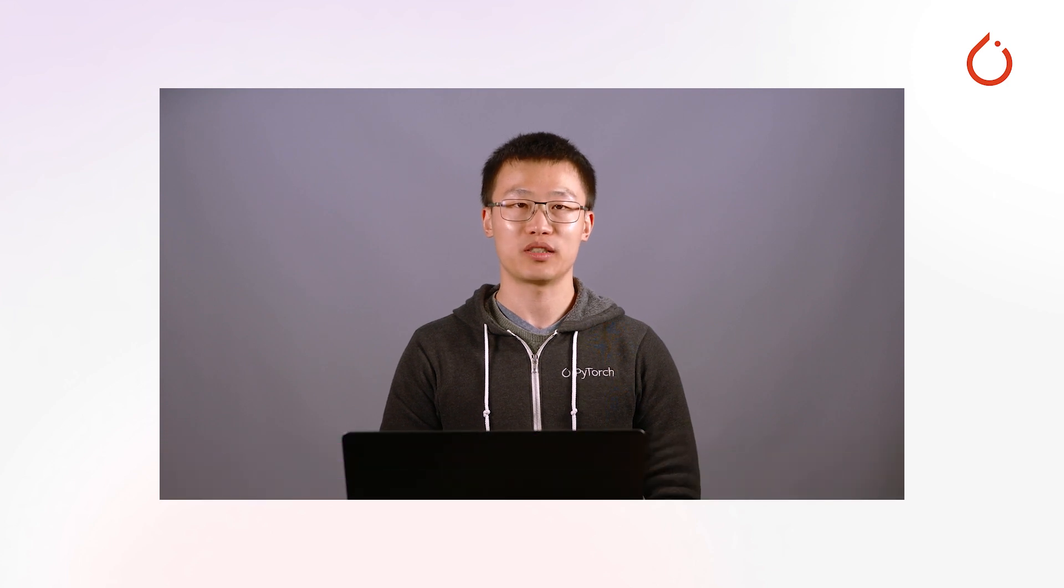Hi, I'm Junjie Wang, and I will talk about Tensor Parallelism and its user API. First of all, let's see how Tensor Parallelism works. There are three parallelism styles we support: column-wise, row-wise, and pair-wise parallelisms.